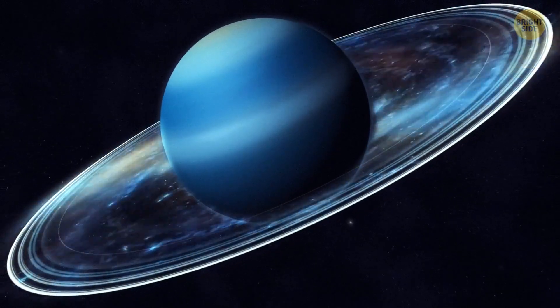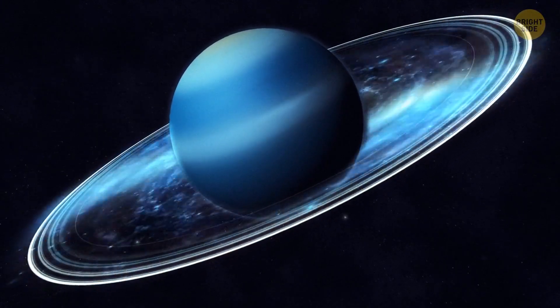Also, bigger planets have stronger gravity. It means that they can keep their rings stable after they form.